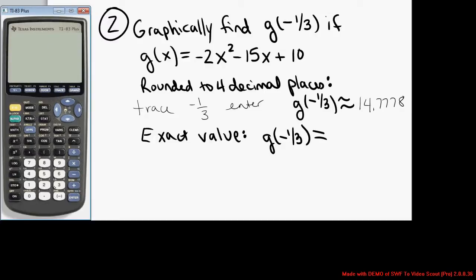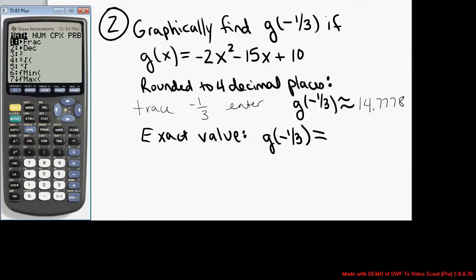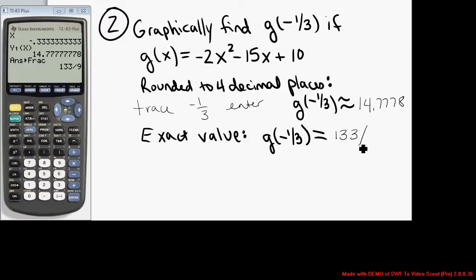Second quit to return to the main screen. Again, if you hit x, it remembers x is negative one-third. If I do vars, y-vars, function, y1 of x and press enter, there it is again: 14.7777. Then I hit math, enter, enter. If you want it as an exact value, it's 133 ninths.